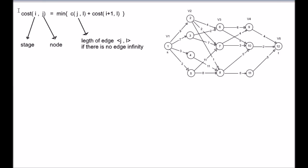Let us define a function cost(i,j) which is equal to minimum of C(j,l) plus cost(i+1,l). Let us consider an example: cost(1,1). Here, the first one is the stage number and the second one is the vertex number or the node number.